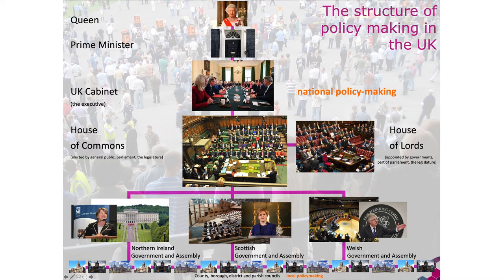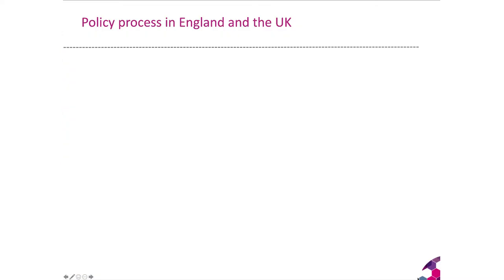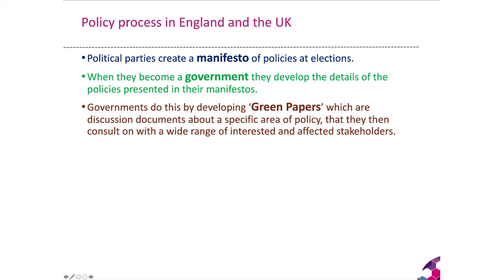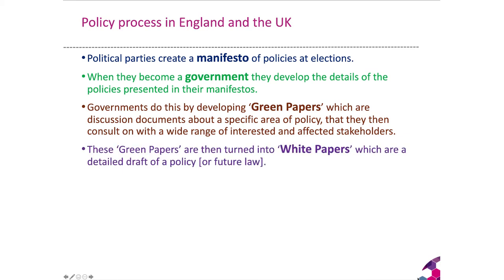At the top you have national policymaking and at the bottom you have local policymaking. Political parties create a manifesto of policies at elections, and when they get into government they develop the details of those policies. Governments do this by developing green papers, which are discussion and consultation documents in a specific policy area, and once they've got feedback from a wide range of stakeholders this is developed into a white paper, which presents a detailed draft of the likely policy or a future law depending on whether it's a flexible direction or something more fixed.